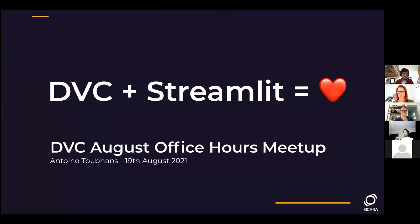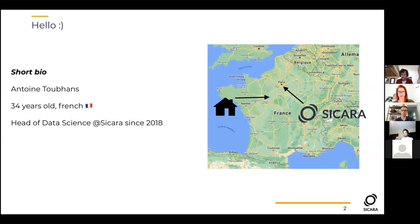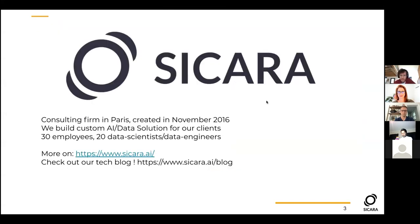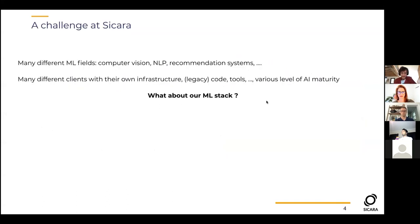Thank you, Jenny. I'll be talking about DVC and Streamlit and how together they can build a very customizable app to visualize data. My name is Antoine Tubans, I'm French, I live near Paris. I work at a consulting firm in Paris called Sicara — we build custom solutions for clients. We're a team of 30, with 20 data scientists, and we work on computer vision, NLP, recommendation systems, and more.